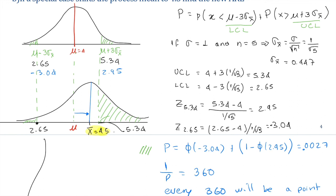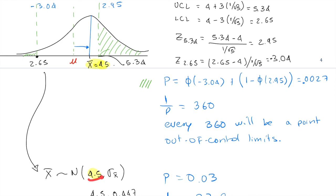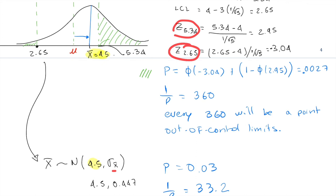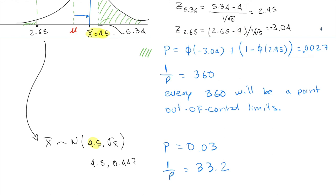The mean is shifted to the right to a new value of 4.5. For this case, x-bar is distributed as normal with this new mean and the same standard deviation. We recalculate the z-values with the mean changed to 4.5 and perform the same calculation, finding that p equals 0.03 and ARL equals 1 over p equals 33.2. That means every 33 units there will be a point that is out of the control limits.